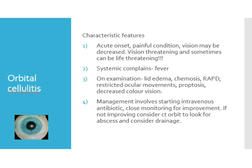Ocular movements can be restricted if there is involvement of the extraocular muscles, which can cause diplopia. There can be proptosis if there is a collection within the orbit causing the globe to move forward. Due to involvement of the optic nerve, color vision can be decreased. Management of orbital cellulitis involves admission to hospital, starting intravenous antibiotics covering gram-positive, gram-negative, and anaerobes, and close monitoring every four hours. If there is no improvement within one to two days, a CT scan of the orbit should be done to look for any abscess, which would require surgical drainage.